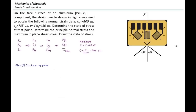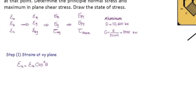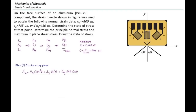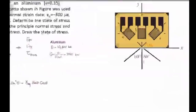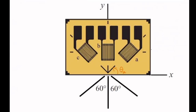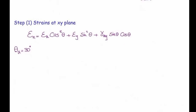Let me start with determining strains in the x and y direction. The strain transformation equation is: εn = εx cos²θ + εy sin²θ + γxy sinθ cosθ. For strain gauge a, θa is the angle of strain gauge a with the x-axis, which is 90 − 60 = 30°. For gauge b, θb = 90°. For gauge c, it is 60 + 90 = 150°, because we measure from the positive x-axis. I will plug each of these angles into the transformation equation.